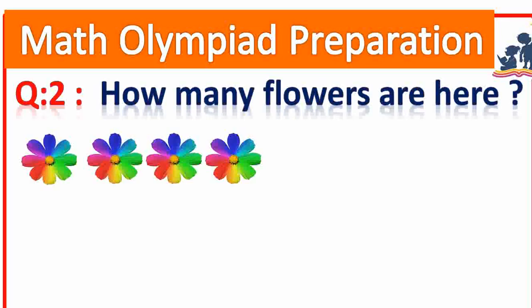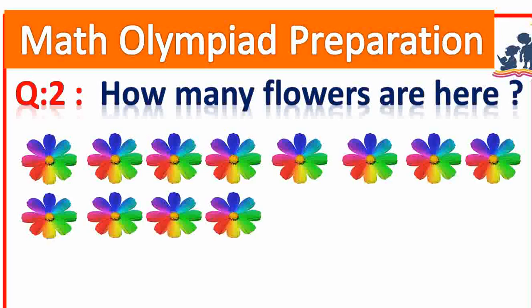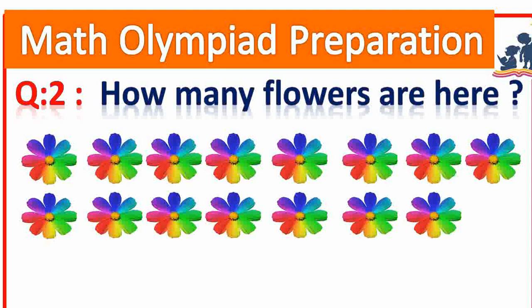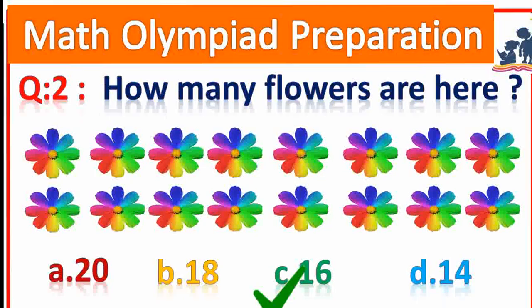Question number 2. How many flowers are here? 8. 8 twos are 16. Yes, the answer is 16. Good.